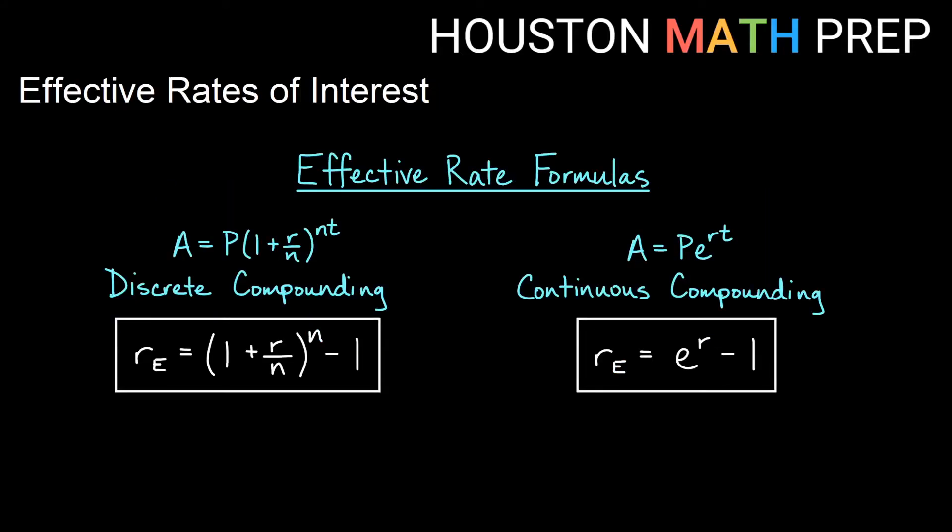We have two different formulas for effective rate depending on the type of compounding we're doing. So if we're doing discrete compounding, that's where we're compounding daily or weekly or monthly. We wait a period of time and then we compound and we wait a period of time and then we compound. Discrete compounding will have this formula of the quantity 1 plus r over n to the n minus 1.